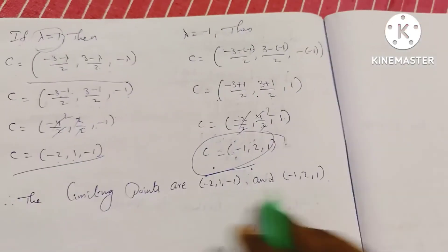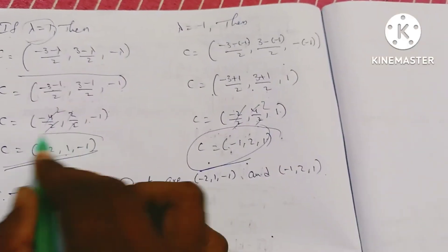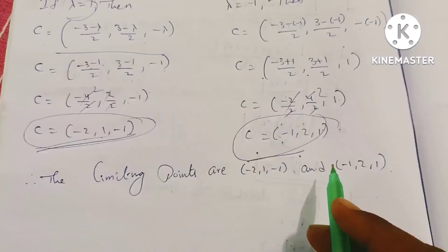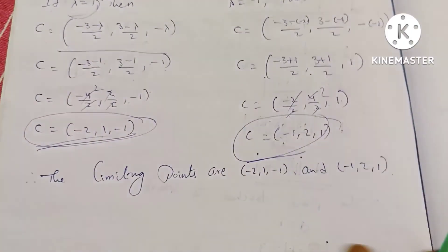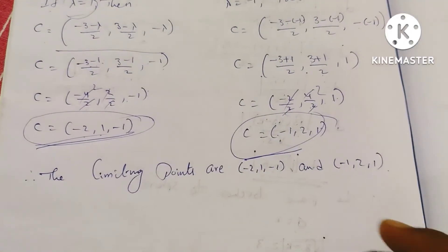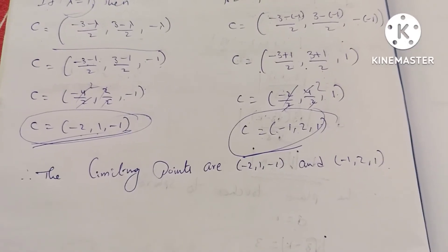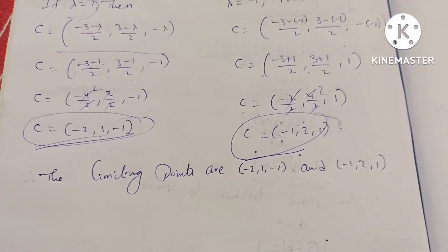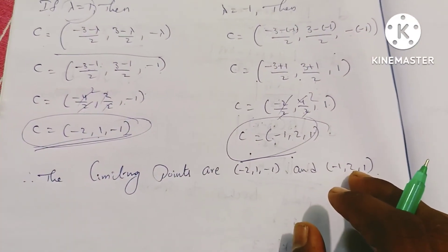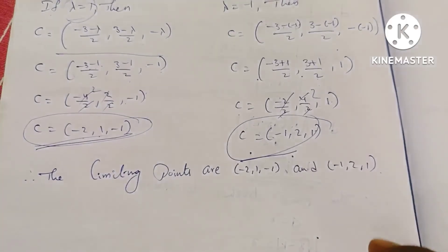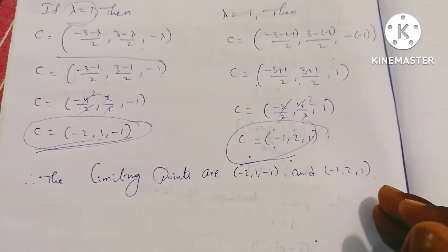Therefore, the limiting points of the coaxial system are the two point sphere centers. This is the solution. Please like and share this video, and if you have any doubts, post them in the comment section. Please support our channel.